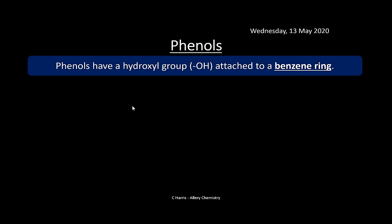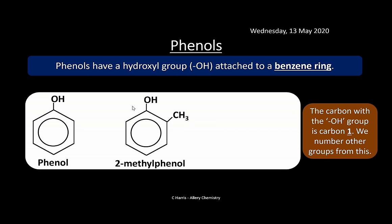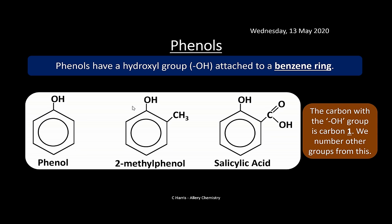Moving on to phenols: phenols have a hydroxyl group (–OH) attached to the benzene ring. We've already seen this in the nomenclature section. We can also have things like 2-methylphenol, where there is a methyl group on the second carbon (the carbon bearing the OH is always carbon 1). Another example is salicylic acid — phenol with a carboxyl group on the second carbon — which is important for making aspirin.